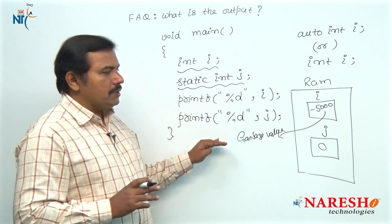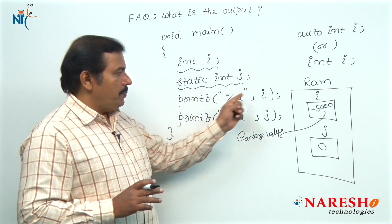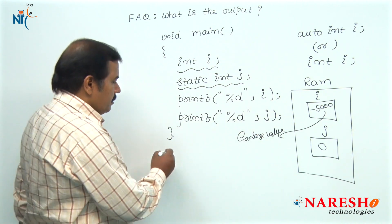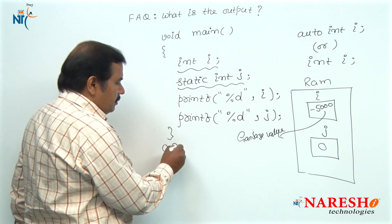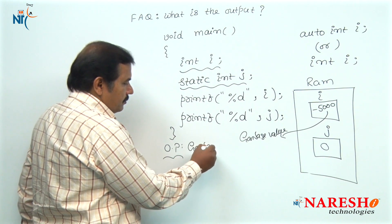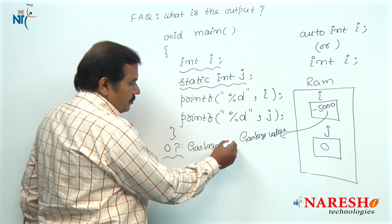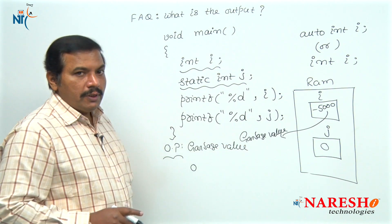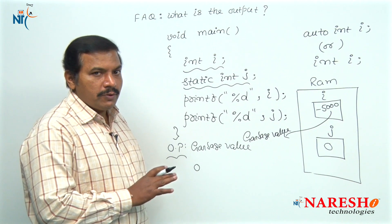Hence, the output of this code is: if we print the values of i and j, we will get the garbage value and 0 as the result. Garbage value and 0, that is the output of this code.